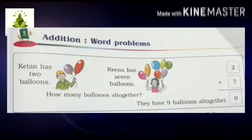Here is an example of a word problem. Ketan has 2 balloons — he is carrying 2 balloons. And Rina is carrying how many balloons? Counting: 1, 2, 3, 4, 5, 6, 7. So 7 balloons — Rina is carrying 7 balloons.